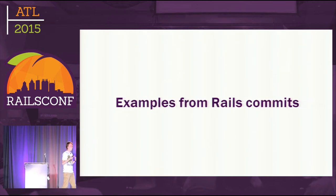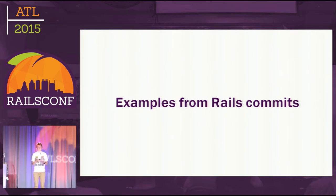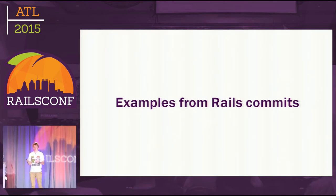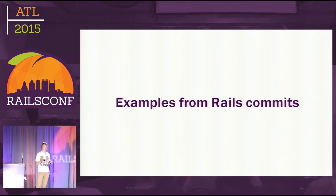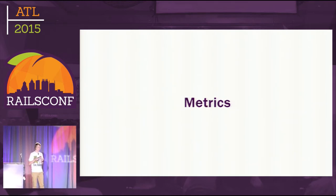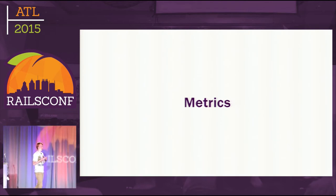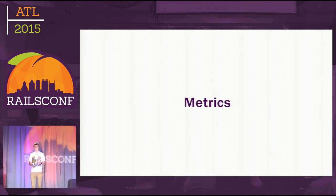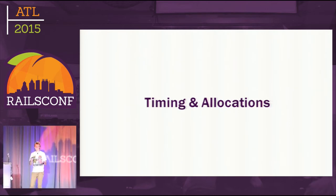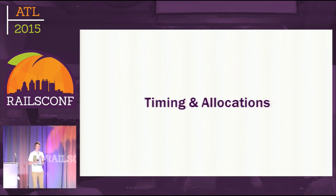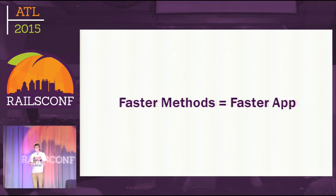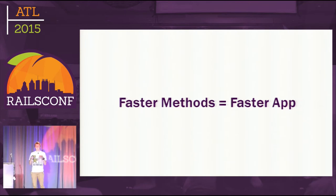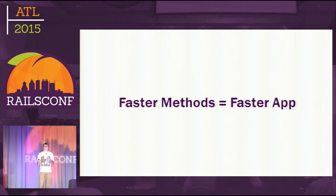To get a better understanding, I have some examples from Rails commits affecting performance and solving performance regressions. But before we review them, let's think about what kind of metrics we count on when we talk about performance regressions in Rails. These two metrics are timing and allocations. Timing is the amount of time some method or piece of code takes to execute. By reducing timing, we make our methods faster and our app faster.